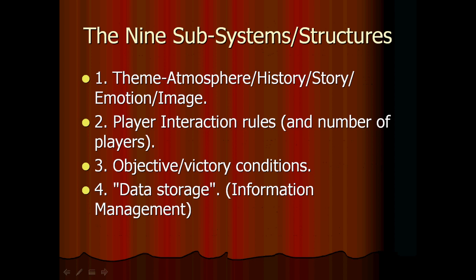So there are nine of them. The first is kind of a combination: theme or atmosphere, history, story, emotion, image. All of these relate to what the game, at least nominally, is about — the context for the game. If it's a historical game, that's obvious. If it's a game that's a story like Final Fantasy VII, that's obvious. Many video games start with some kind of emotion — for example, what is it like to be a rock star? And many rhythm games have derived from that.